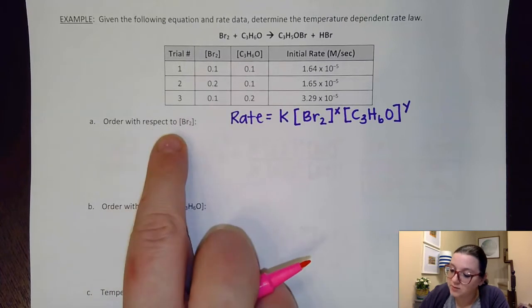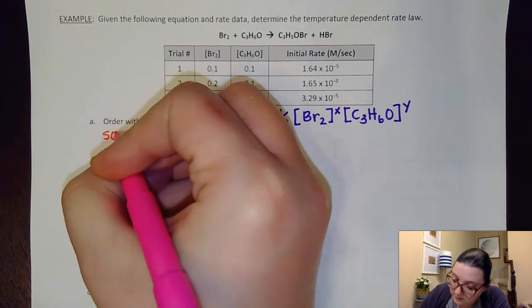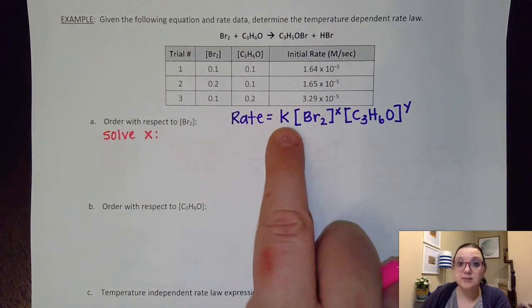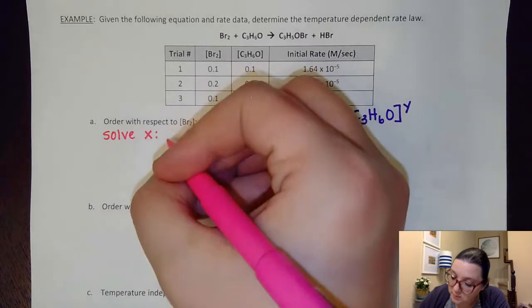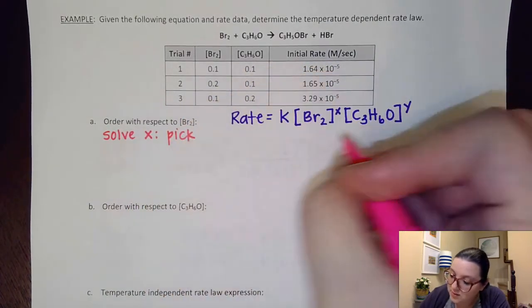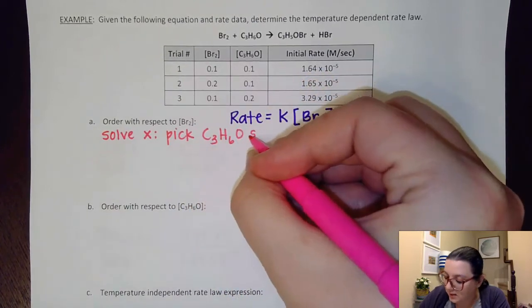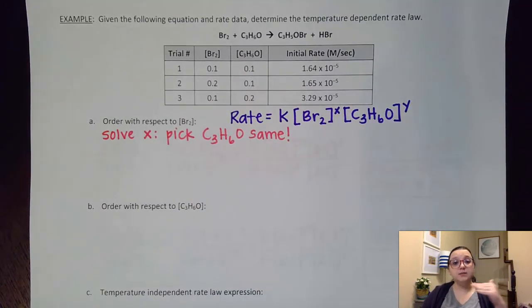And so if I want to solve the order with respect to Br2, what that means is that I want to solve x. And so in order to solve x, I would not only want k to cancel out, which it will automatically, but I would also want y to cancel out. And so therefore, I need to pick two trials where the C3H6O stays the same. And what we would do is once we have those two trials selected, we would put one trial over the other one to help us start solving that order.